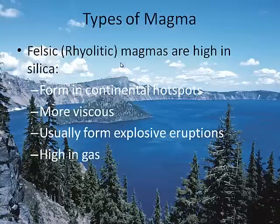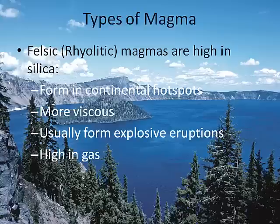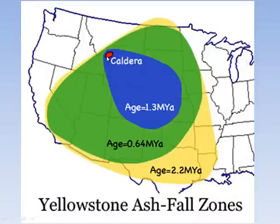Felsic or rhyolitic magmas are high in silica. We find those when a hot spot creates a volcano in a continental plate. This type of magma is more viscous, almost always forms explosive eruptions, and contains a lot of gas — that's one of the reasons they're so explosive. There's a hot spot in the mantle just below Yellowstone National Park, and over the past few million years there have been extremely violent volcanic eruptions there. The colored areas on the map mark the extent of the continent covered with volcanic ash from those explosive eruptions.